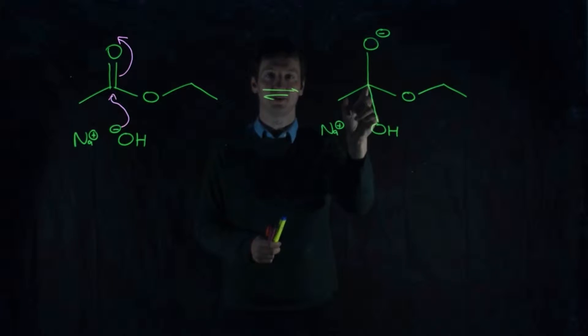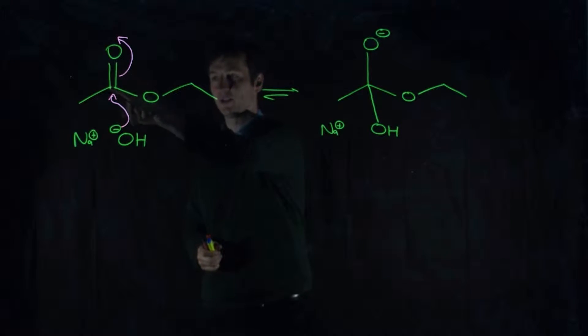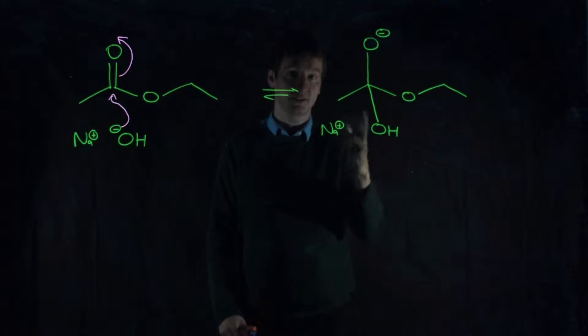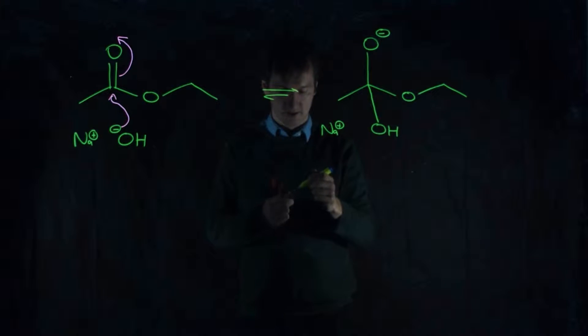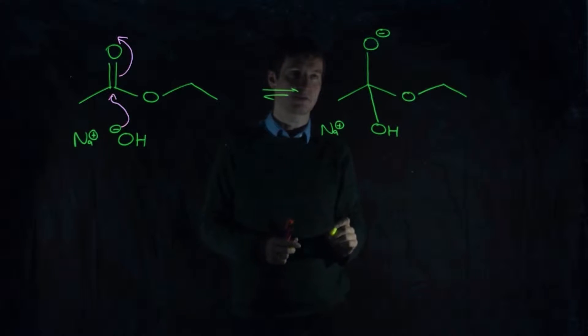And this is called the tetrahedral intermediate, because it's got a tetrahedral shape, because this was sp2, three things attached to the one atom. This is sp3, so it's now a tetrahedral shape. And it's an intermediate, because it never lasts very long. So, what happens next? Well, you can see I've put in a pair of reversible arrows. So this step is, of course, reversible.